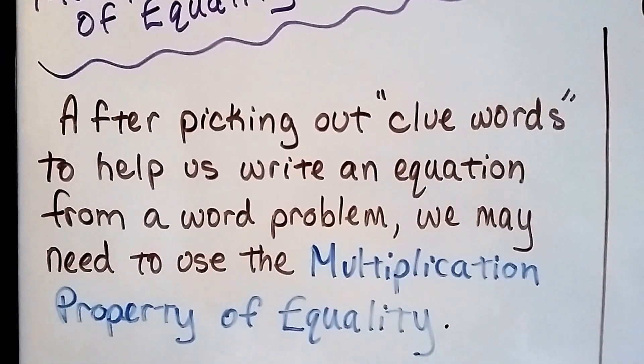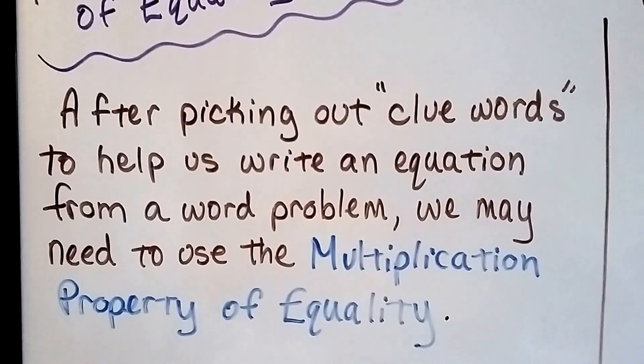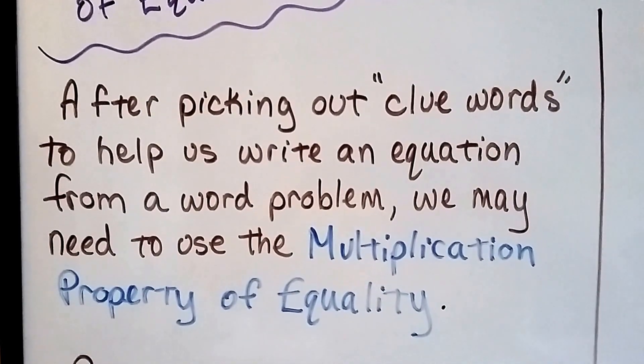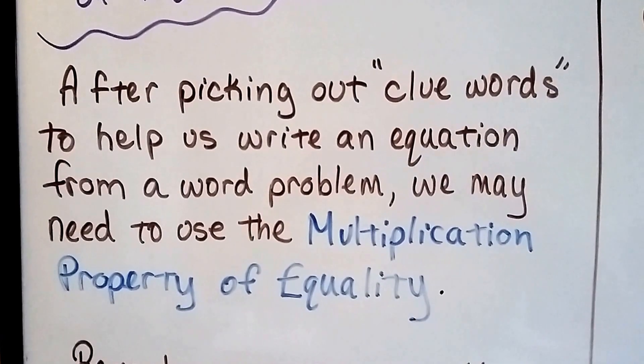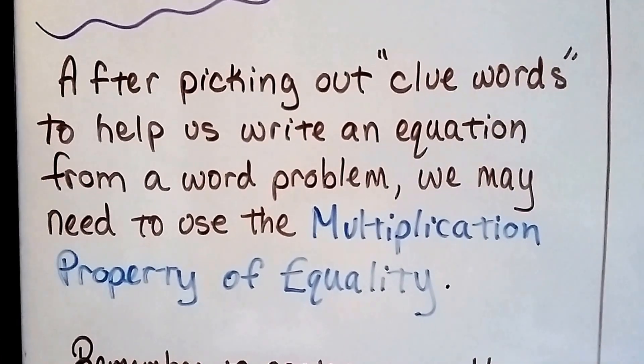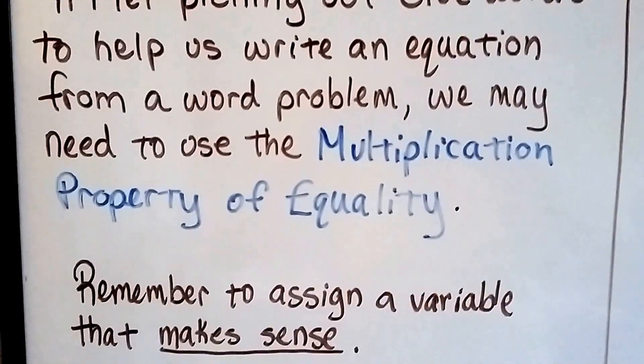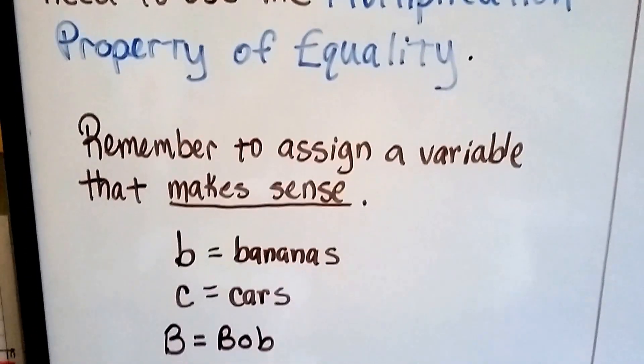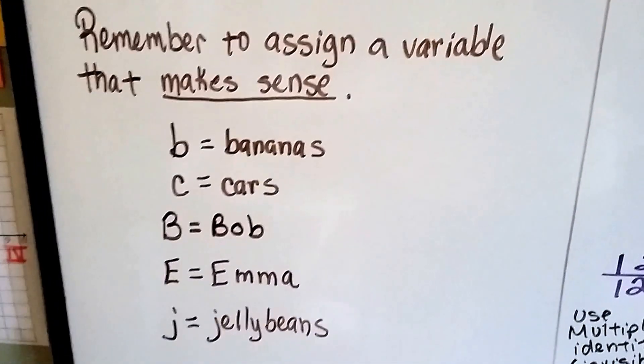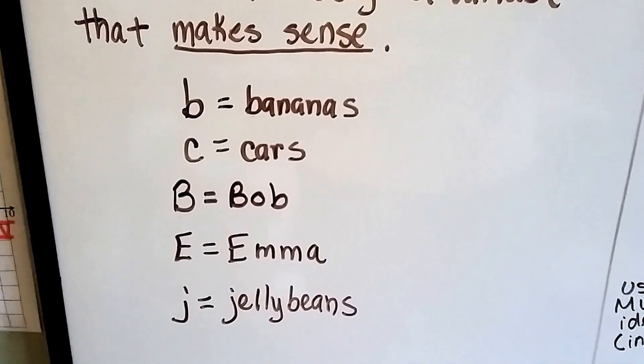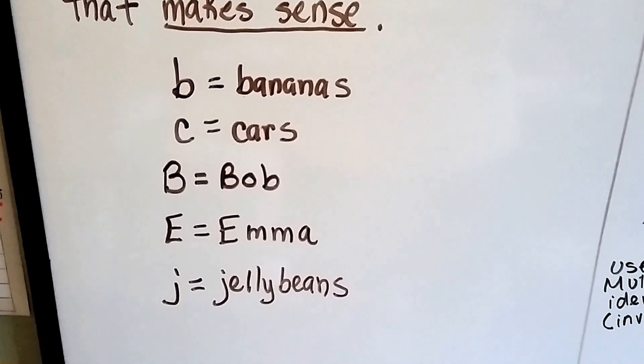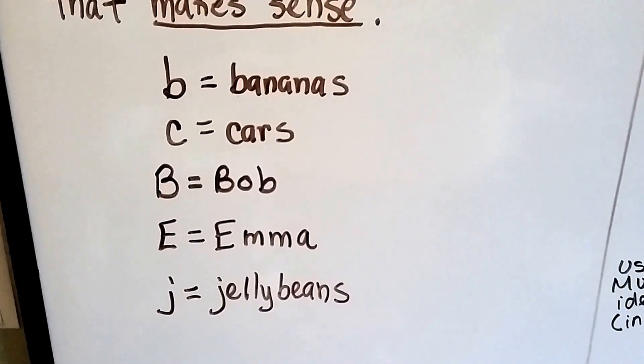So after picking out clue words, and there's a link in this description about how to pick good clue words to help us write an equation from a word problem, we may need to use that multiplication property of equality. Just remember to assign a variable that makes sense, like B for bananas or C for cars, a capital B if you're going to do Bob, or a capital E for Emma, or a J for jelly beans.